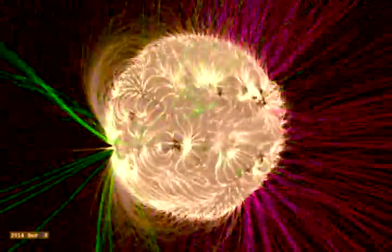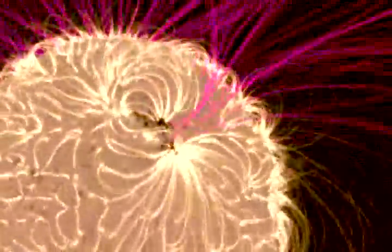The white lines are closed magnetic field lines, so they come out from the surface of the sun and then loop around and close near the solar surface.